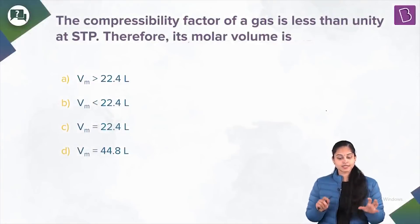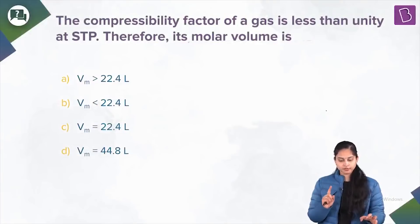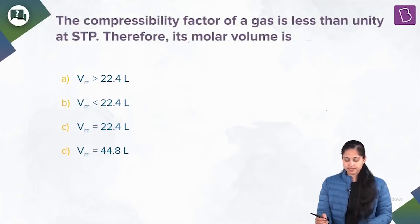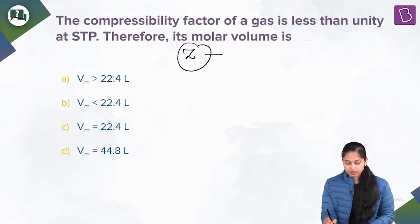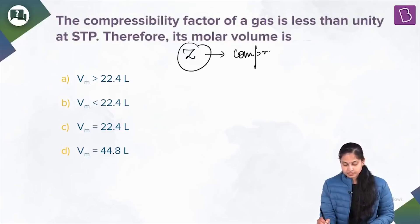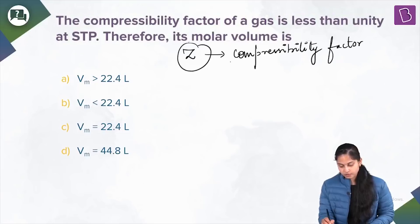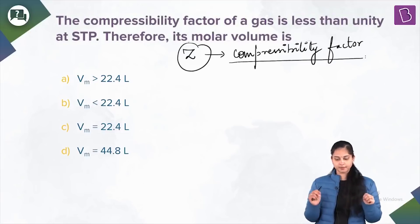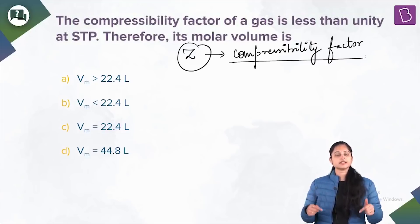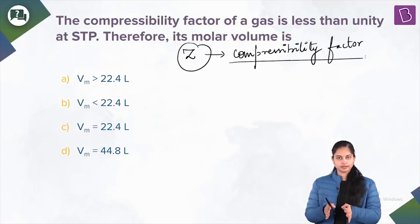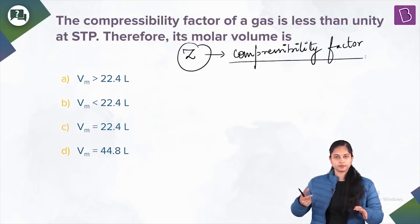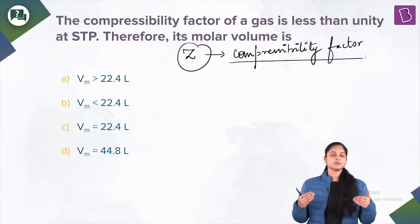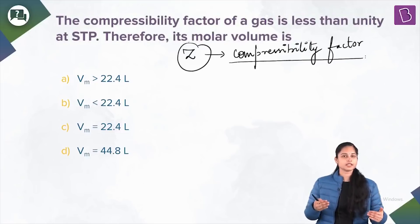The next question: the compressibility factor of a gas is less than unity at STP. Therefore, its molar volume is? Here we are talking about Z, known as the compressibility factor or compression factor. This correction factor describes the deviation of a real gas from an ideal gas.